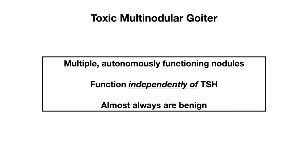With toxic multinodular goiter, you get this patchy uptake because it really depends on where the nodules are and how they're hyperfunctioning.